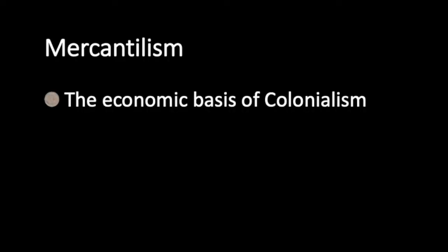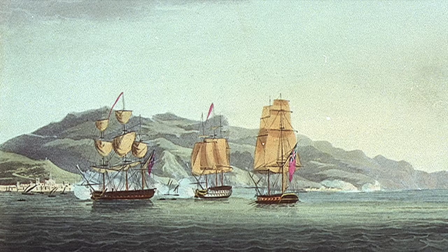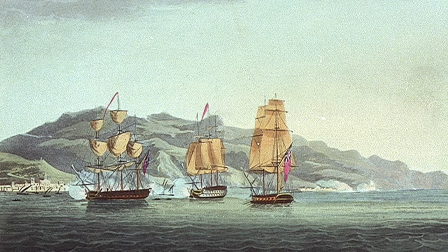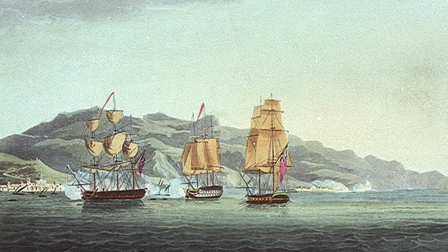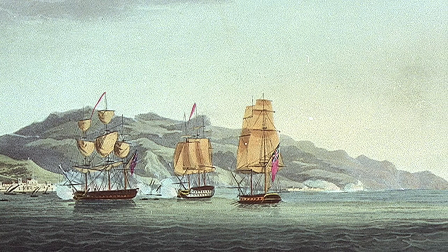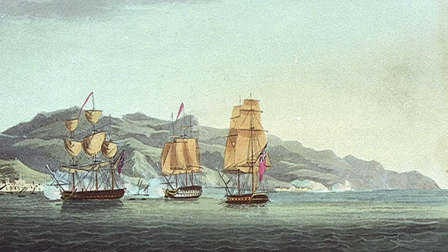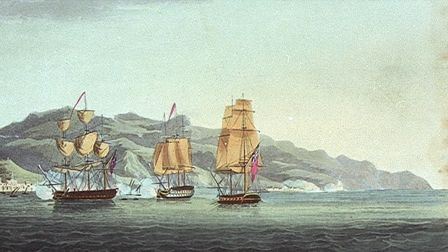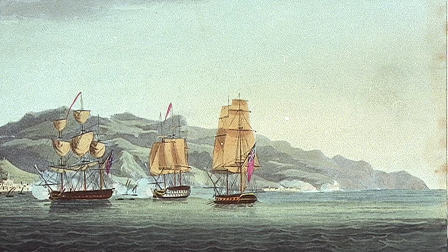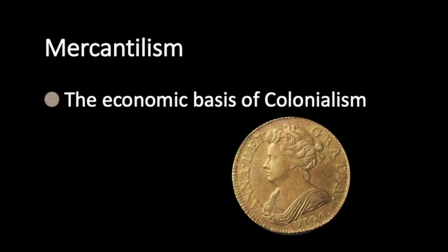To understand the role of colonial coins and tokens, it's important to understand mercantilism. Mercantilism was both the economic theory and the economic basis of colonialism. Its basic tenet was that countries should maintain a positive trade balance, meaning that they should export more than they import, but in particular that there should be a flow of gold and silver into their country rather than flowing out of the country.